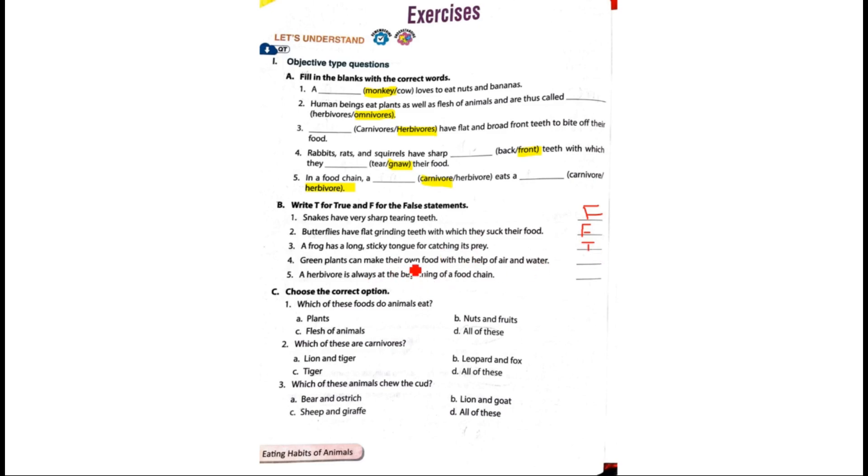Green plants can make their own food with the help of air and water. This is again true. A herbivore is always at the beginning of a food chain. This is false. A plant is always at the beginning of a food chain.